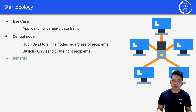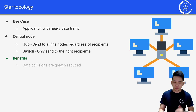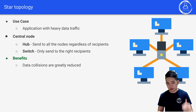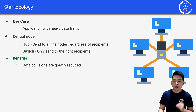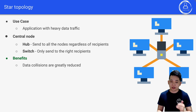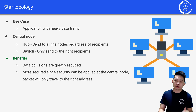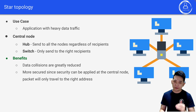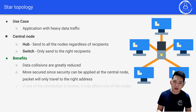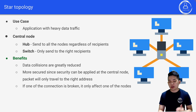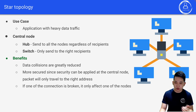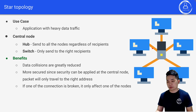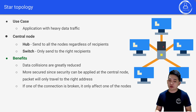Benefits of star topology include: data collisions are greatly reduced, especially if the central node acts as a switch. It is more secure since security can be applied at the central node, ensuring packets travel to the right address. Also, if one connection is broken, it only affects that one node — the others continue to function.